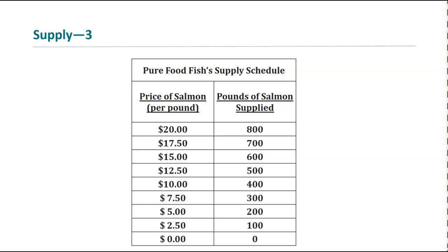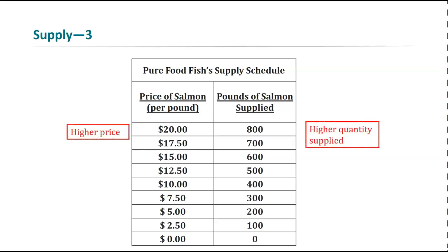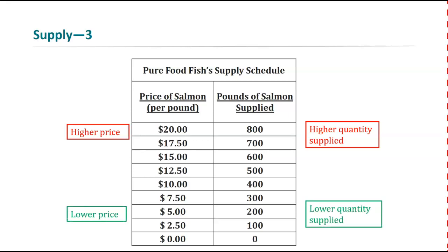Here's an example using the price of salmon. We have a supplier called Pure Food Fish, and at each potential price per pound of salmon listed on the left side of the table, you can see how many pounds they're willing to supply. The trend illustrates the law of supply: the higher the price, the higher the quantity supplied, and the lower the price, the lower the quantity supplied — down to the point where at zero dollars per pound, they won't bring any salmon to market. This is the supply schedule for one firm, Pure Food Fish.